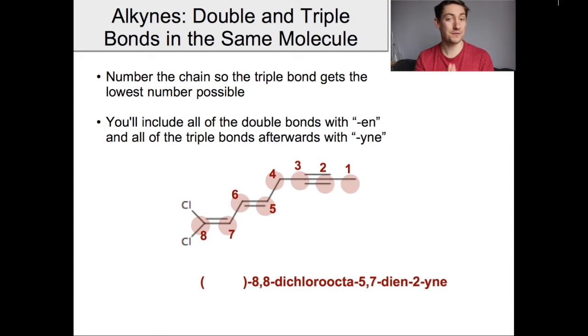And again, I want to emphasize, we have to number this from the right-hand side, not the left, because the triple bond gets the lowest number possible. So octa-5,7-diene-2-yne is the root of this.